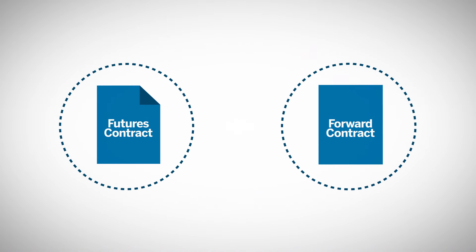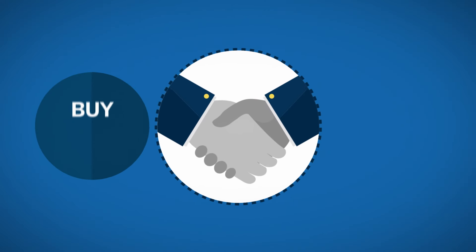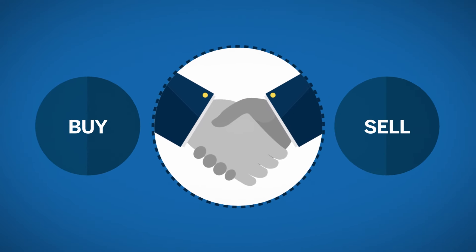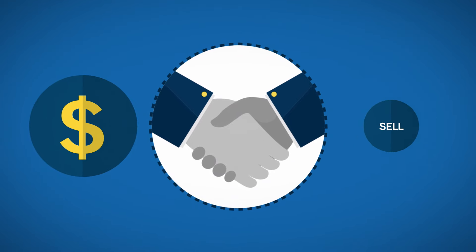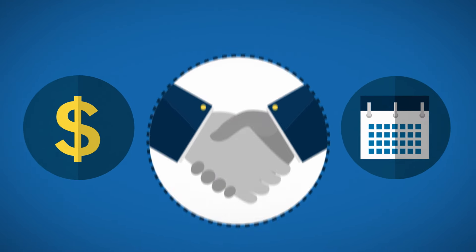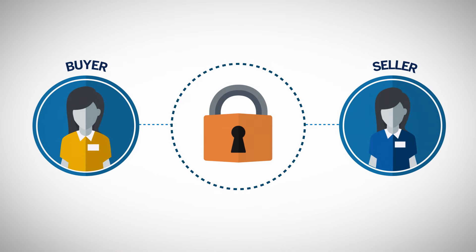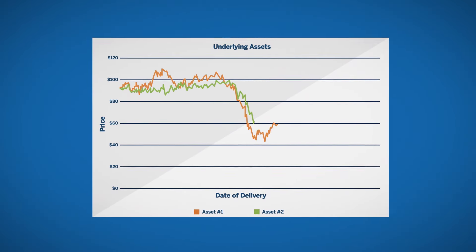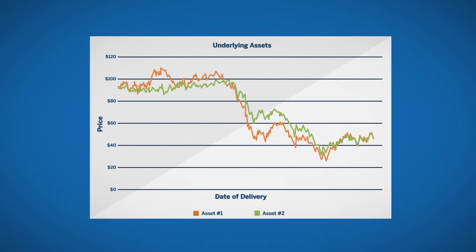Futures contracts and forward contracts are agreements to buy or sell an underlying asset at a specific price on a specific date in the future. These agreements allow buyers and sellers to lock in prices for physical transactions to mitigate the risk of price movement for the underlying asset through the date of delivery.